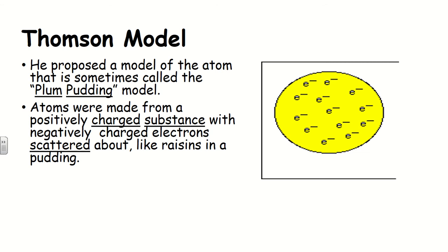Thomson proved that the atom was divisible and named these tiny negatively charged particles 'corpuscles' — we now call them electrons. Since the gas was neutral, he reasoned there must also be a positively charged particle inside the atom. He couldn't find direct evidence for it, but he proposed a model called the plum pudding model: a positively charged substance like cake with electrons scattered through it like raisins in a plum pudding.